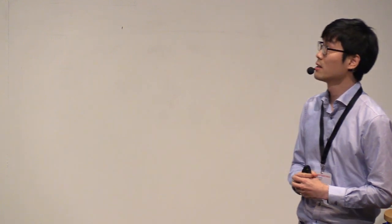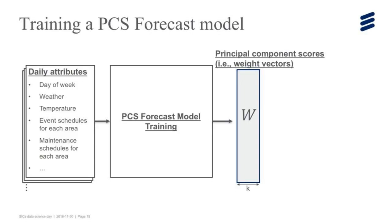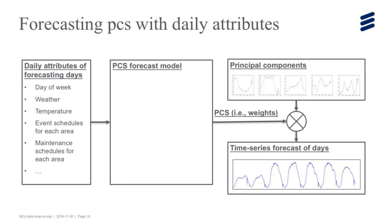For forecasting, we come up with an idea that we want to utilize the connection between the cause of the time series shape, such as weather or event schedules, to the PCS. With this idea, we build this PCS forecasting model. The input is daily attributes like day of week, weather, temperature, event schedules. The output is the principal component scores, which is the weight for each component. We can collect this PCS from training data and daily attributes from external sources. With these input and output samples, we can train this forecasting model. For forecasting tomorrow, we collect daily attributes for tomorrow, which can be known in advance. Then using this trained model, we compute PCS. We already have principal components from training data. We multiply it and obtain this forecasting.